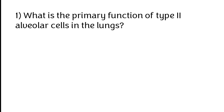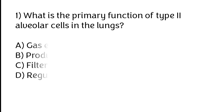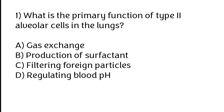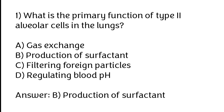What is the primary function of type 2 alveolar cells in the lungs? Options: A) Gas exchange, B) Production of surfactant, C) Filtering foreign particles, D) Regulating blood pH. The correct answer is option B, production of surfactant.